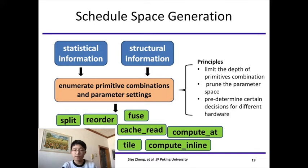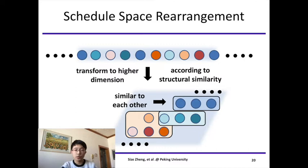We know that many points in the space are inferior, so we can prune them out. So we apply three principles during enumeration in order to prune the space. The principles are: limit the depth of primitives combination, prune parameter space, and predetermine certain decisions for different hardware. After pruning, we apply another technique called rearrangement to the space. The purpose is to make the space easier to explore. The original space generated by the enumeration process is actually a linear list, as is shown in this figure. Such linear list is disorganized and provides little information for exploration.